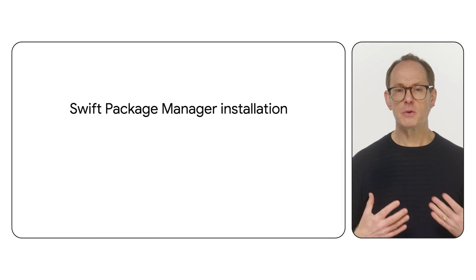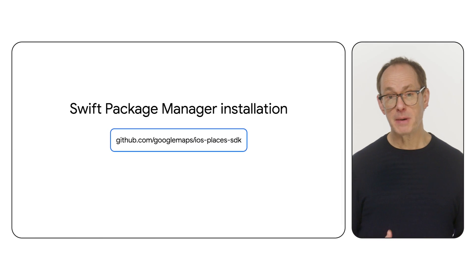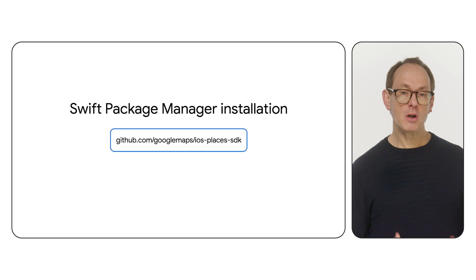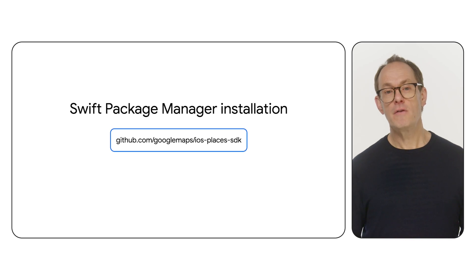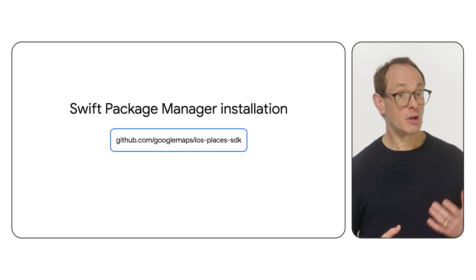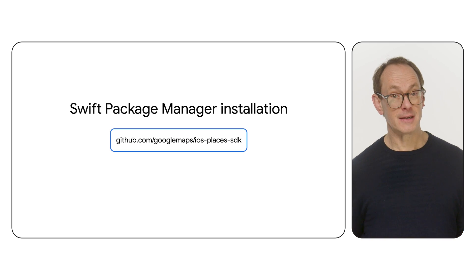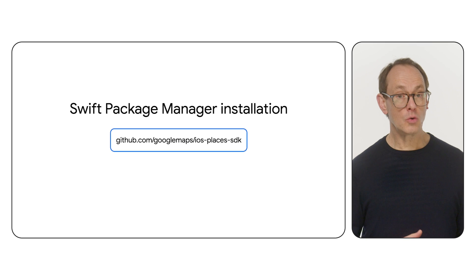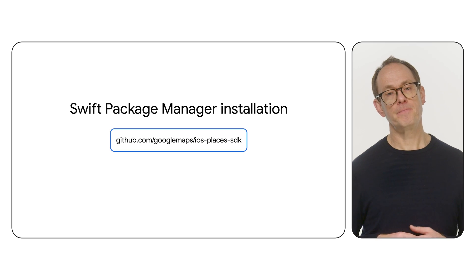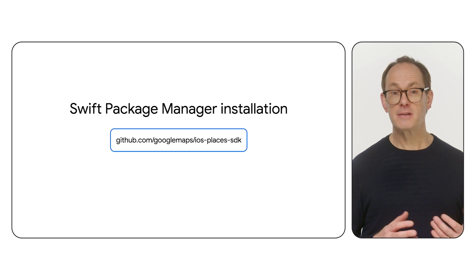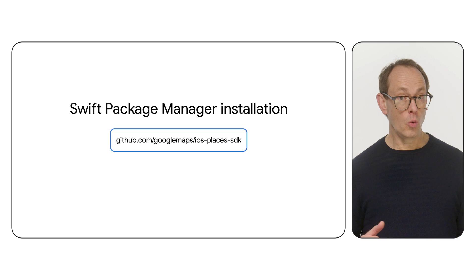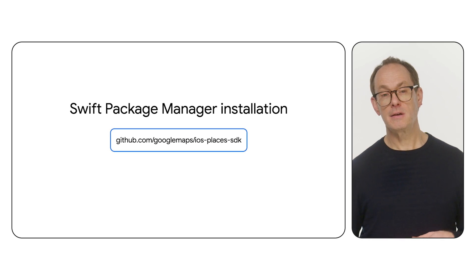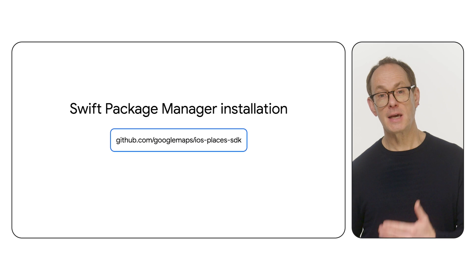To install the preview Swift SDK with Swift Package Manager, follow the installation instructions for Places SDK for iOS. You need to select version 9.2.0 or later, so check your version number carefully, and make sure you choose the Google Places Swift Package. The GitHub repo is the same for all the iOS Places SDKs: github.com/googlemaps/ios-places-sdk.